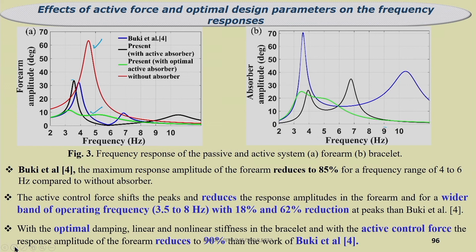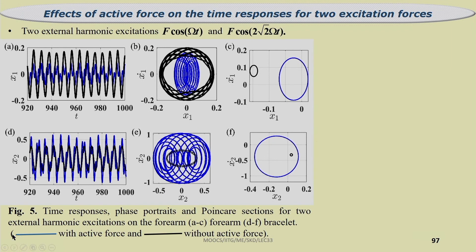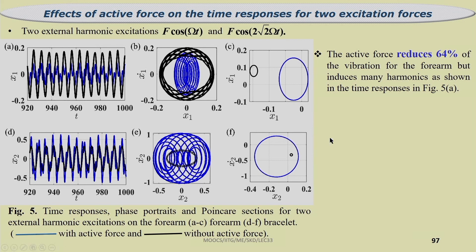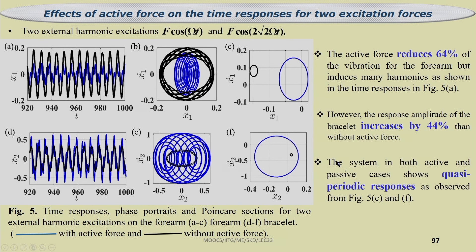With optimal damping, linear and non-linear stiffness of the bracelet, and active control force, the response amplitude of the forearm reduces by 90 percent compared to the work of Buki et al. The active force reduces forearm vibration by 64 percent but induces many harmonics. The response amplitude of the bracelet increases by 44 percent compared to without active force. In both active and passive cases, quasi-periodic response is observed.